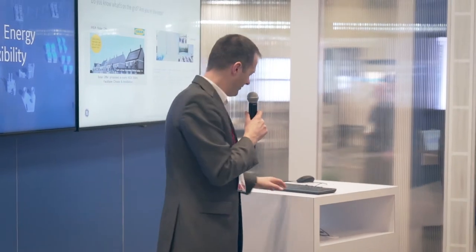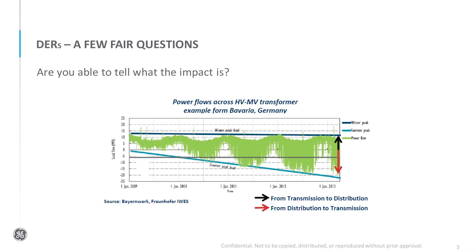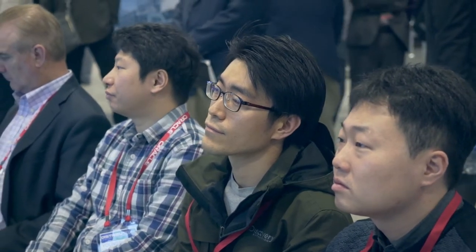So that was the first aspect. Now the second step is: what are these DERs causing on the grid? There's a lot of literature on this, of course. The impacts are known. At the distribution level, it's back feeds and voltage troubles. At the transmission level, it's balancing issues. And this will come at the interface between transmission and distribution, so you need to sit with your TSO to learn about these impacts and coordinate.